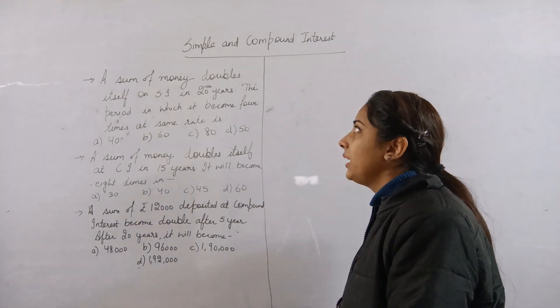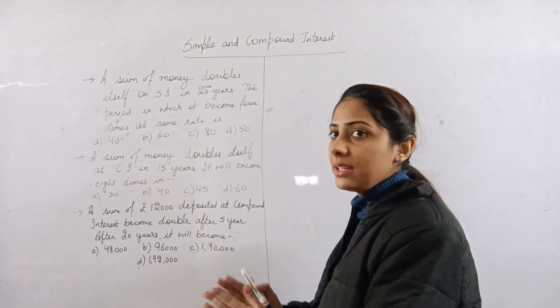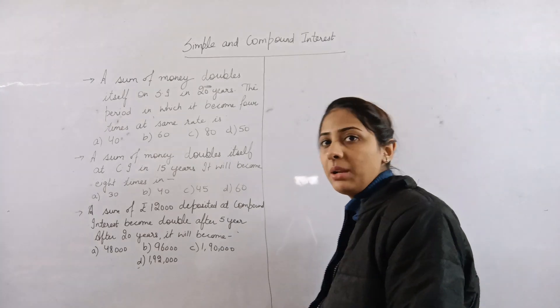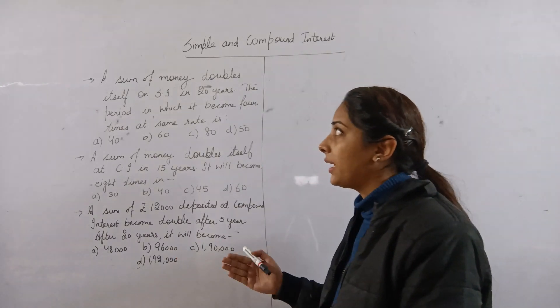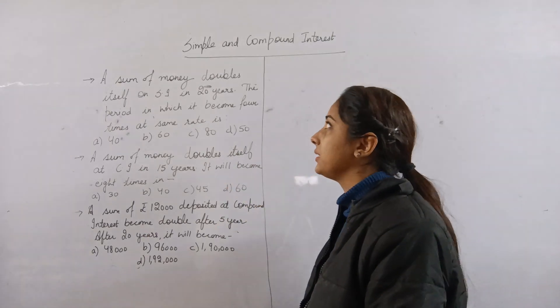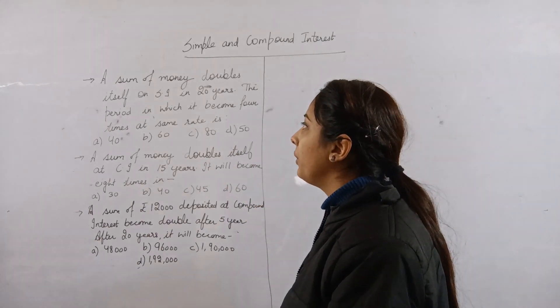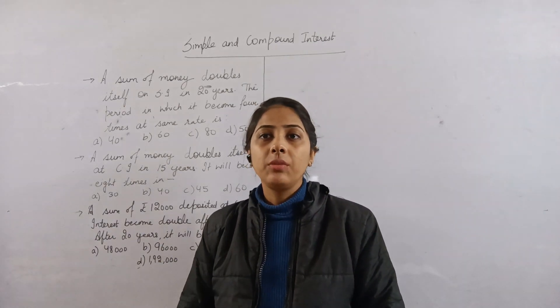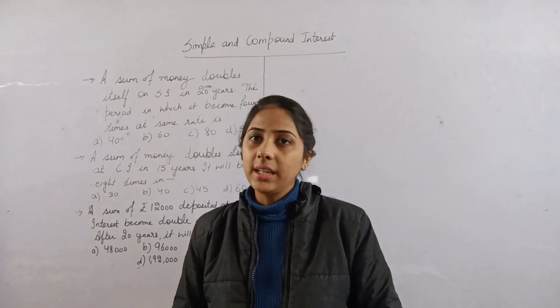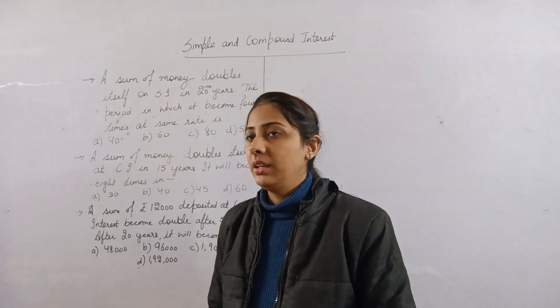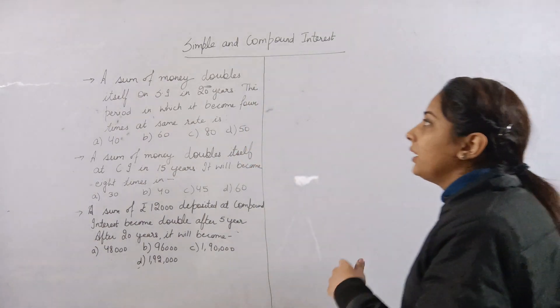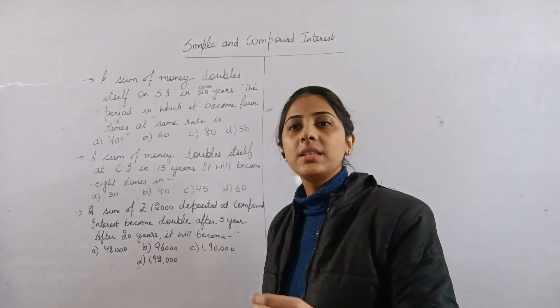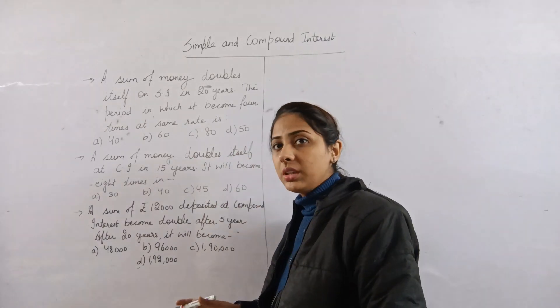Question 1 is on simple interest. A sum of money doubles itself on SI in 20 years. If I put a principal amount, it will double with simple interest within 20 years. Find the period in which it becomes 4 times at the same rate. We'll use the PRT formula.